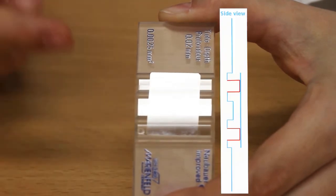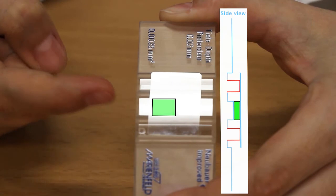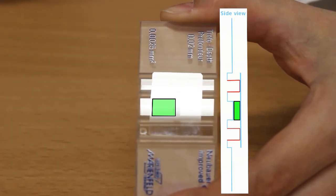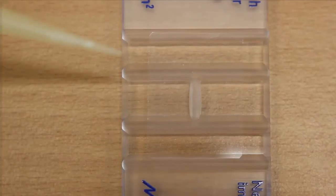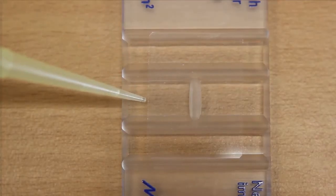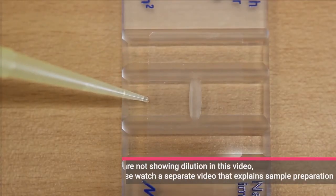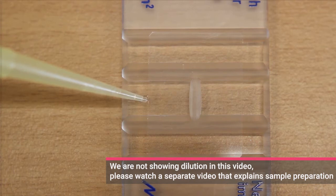A chamber of defined height is created between the coverslip resting on the support structure and the sample below. Load the chamber by pipetting your sample next to the coverslip. Capillary forces will suck the fluid into the chamber. Make sure not to overload it.